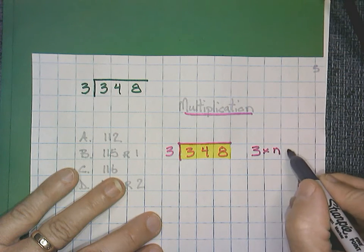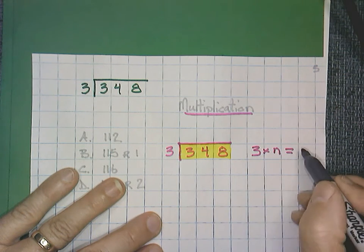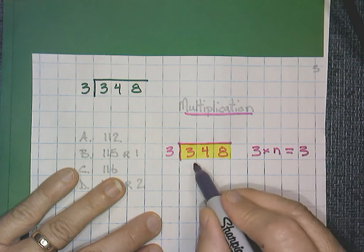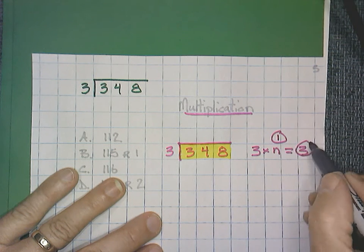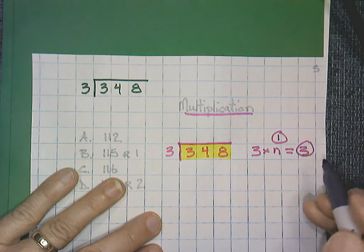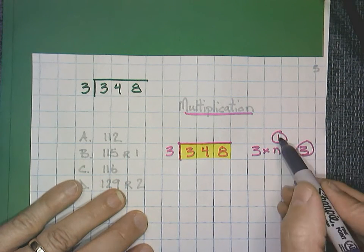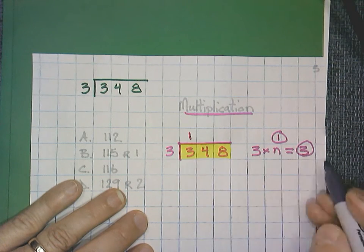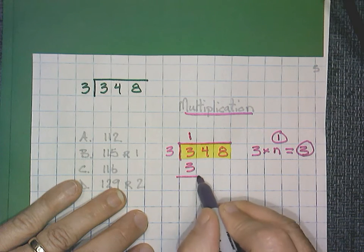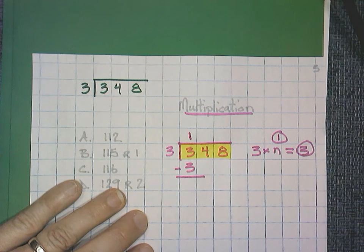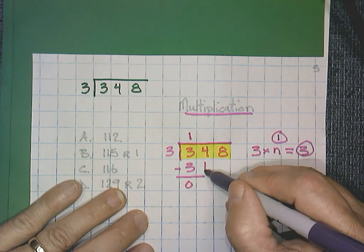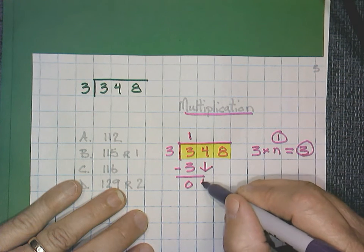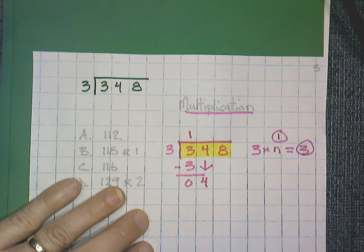3 times n equals 3. Well, in this case, n will be 1. And we know that 3 times 1 is equal to 3. We're going to use both these numbers. The 1 on top. The 3 goes down here. And then we subtract. That's going to be 0. Bring down our 4.